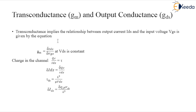Transconductance gm is the ratio of output current ids to the input voltage vgs. This implies a relationship between the output current ids and the input voltage vgs, given by the equation: gm = delta ids / delta vgs, which is the change in drain-to-source current to the change in input voltage vgs, at a constant value of vds.